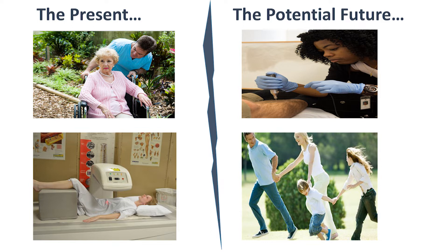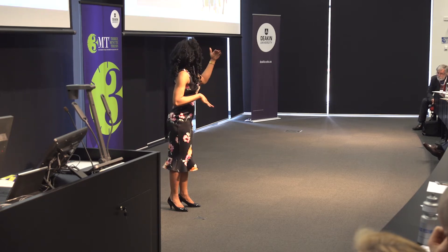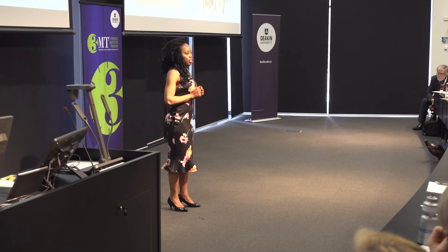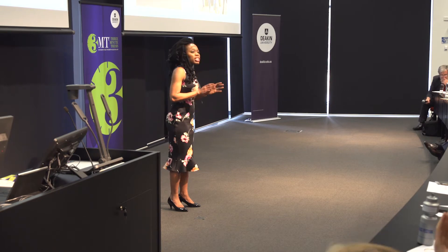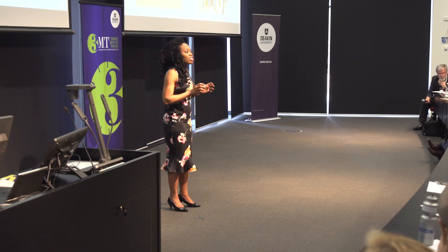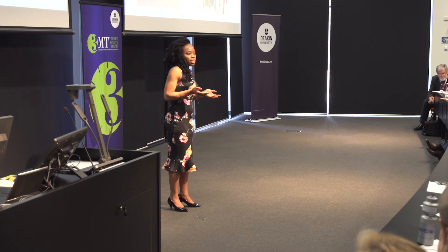Prevention is at the cornerstone of addressing this issue. But the question is, how do we identify those at higher risk of fracture so that the right treatments are brought to the right people? The current method is a scan of bone mineral density. Ideally, the higher the bone mineral density, the lower the risk of fracture and vice versa. But this is not necessarily true. There is an established evidence base to show that the highest number of fractures occur in people without low bone mineral density.